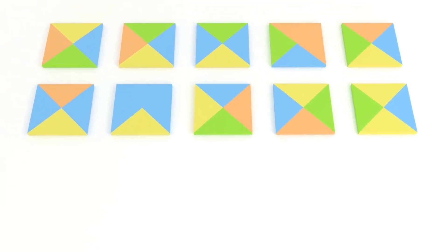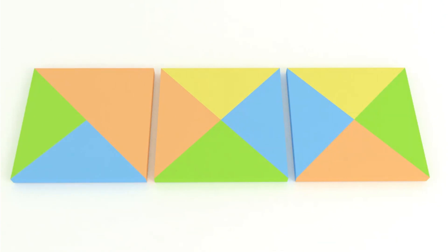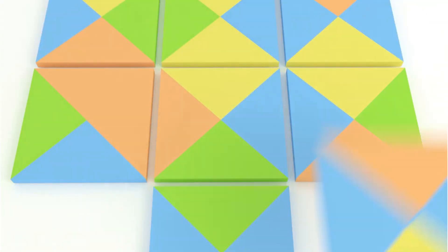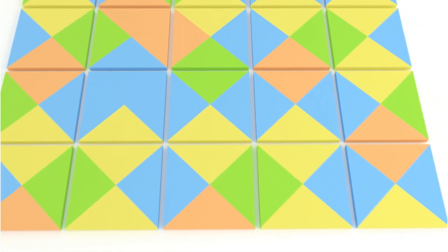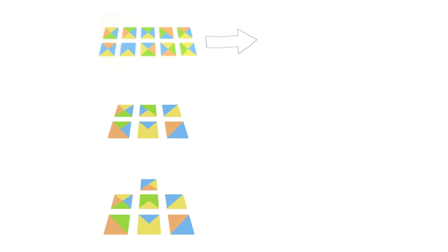These are called Wong tiles. You can arrange them on a grid like this to create solid colored squares. And if you can do it so that all the edge colors match on out to infinity, that's called tiling the plane. So the question is, will any given set of Wong tiles tile the plane?